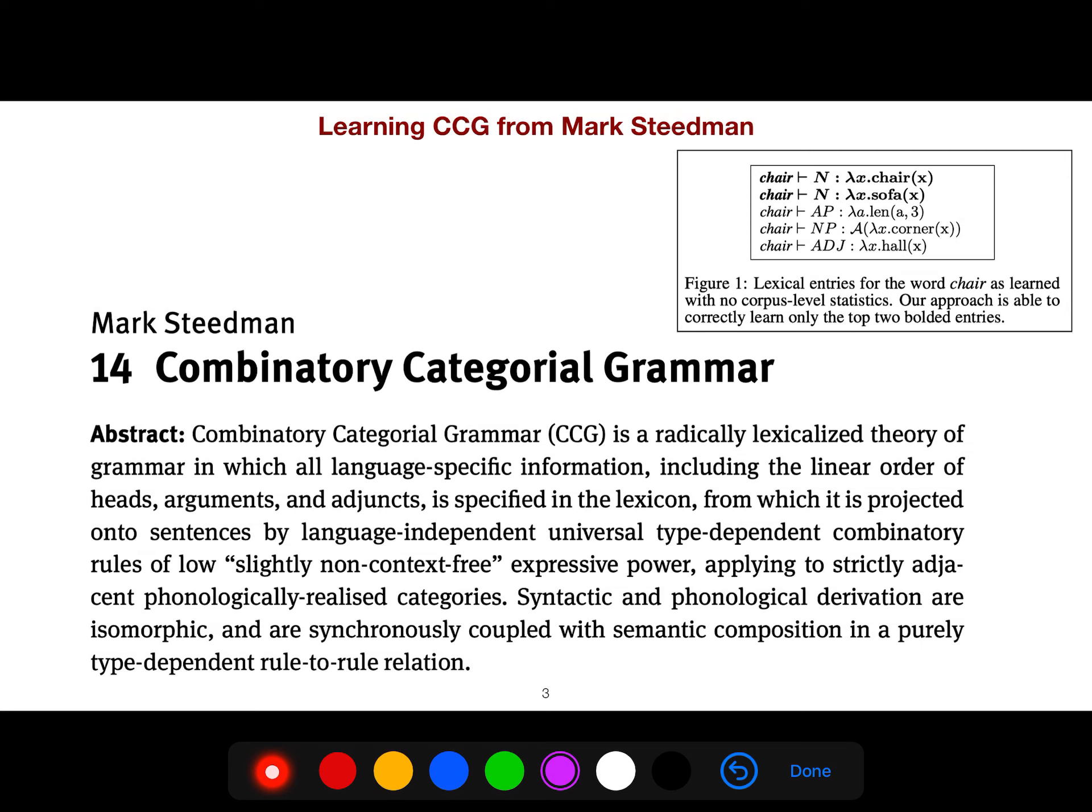What is combinatorial categorical grammar? The best reference is Mark Steedman. CCG is a radically lexicalized theory of grammar in which all language-specific information, including the linear order of heads, arguments, and adjuncts, is specified in the lexicon. Once you know that you do the lexicon, we call it super tagging, or you may use bottom-up parsing. But once you learn your lexicon, for example, lexical entries like chair could be either this or that.